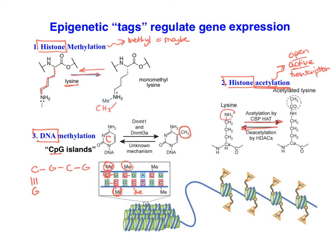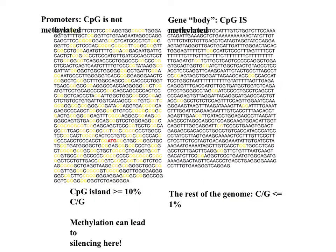Let's talk next about what happens when we have methylation of the DNA. We're looking at two sequences here. On the left, we've got a promoter region, and on the right, a gene body or the coding region of the gene. In the gene body, there are not very many CpG bases — you can see it's fairly rare.